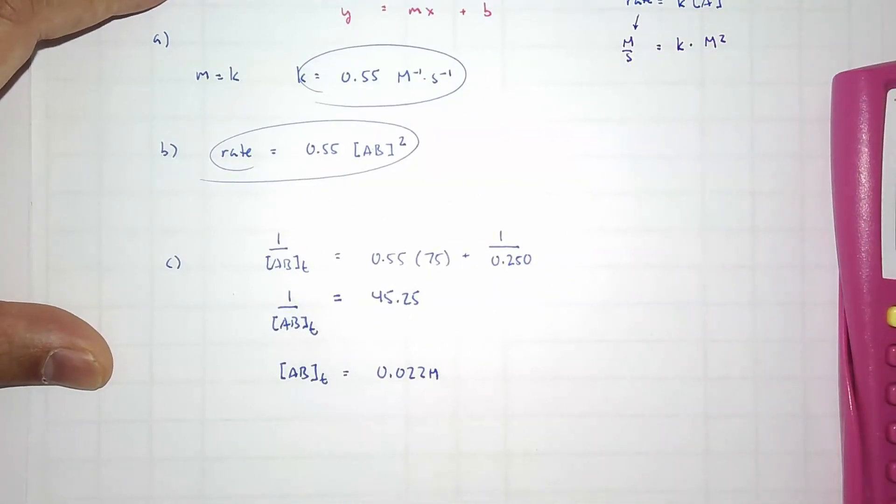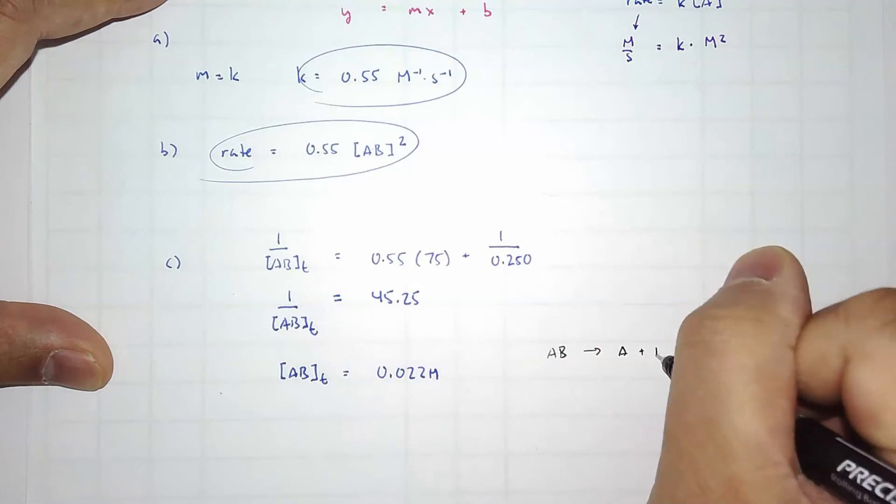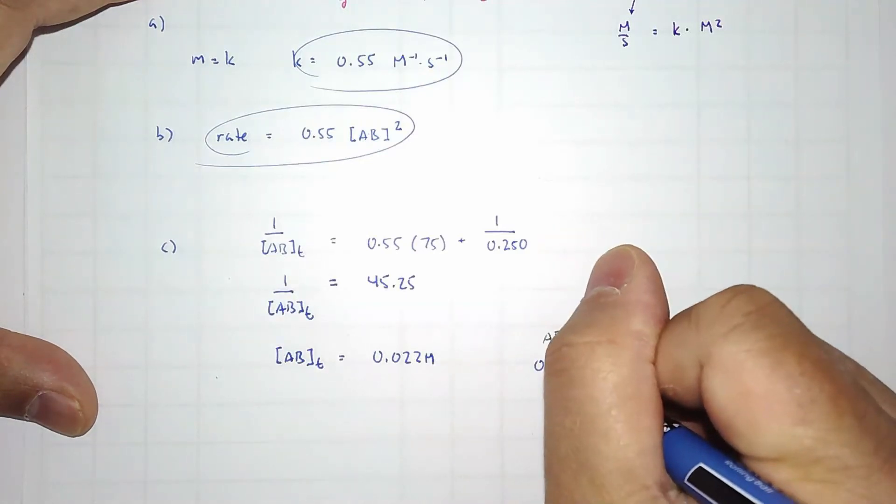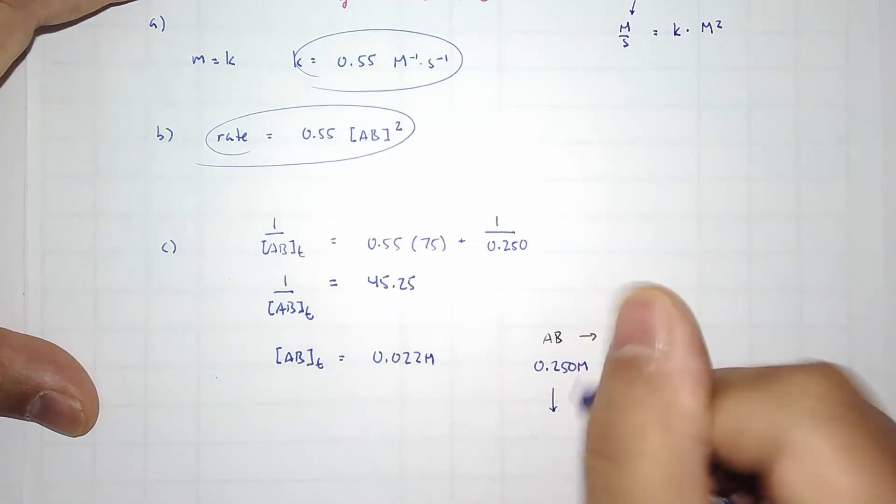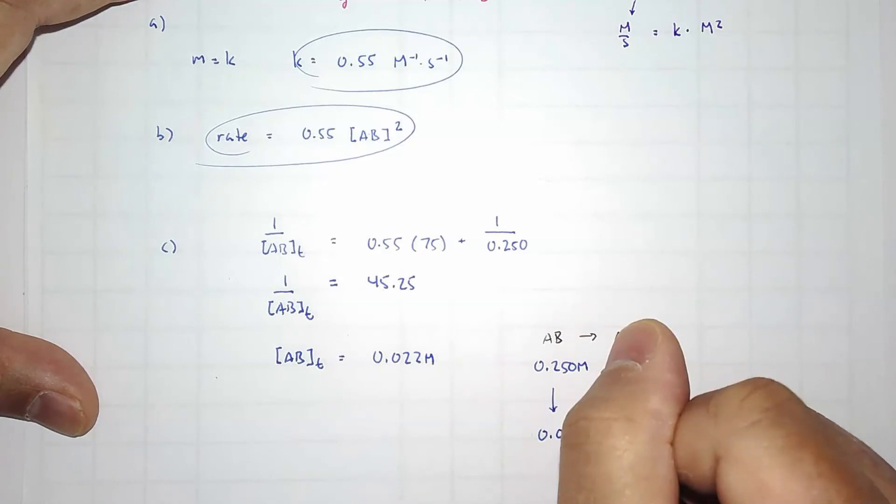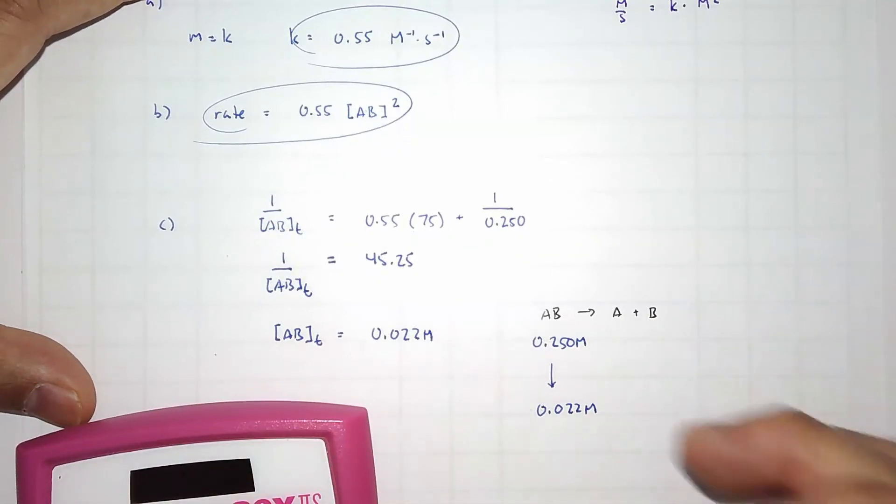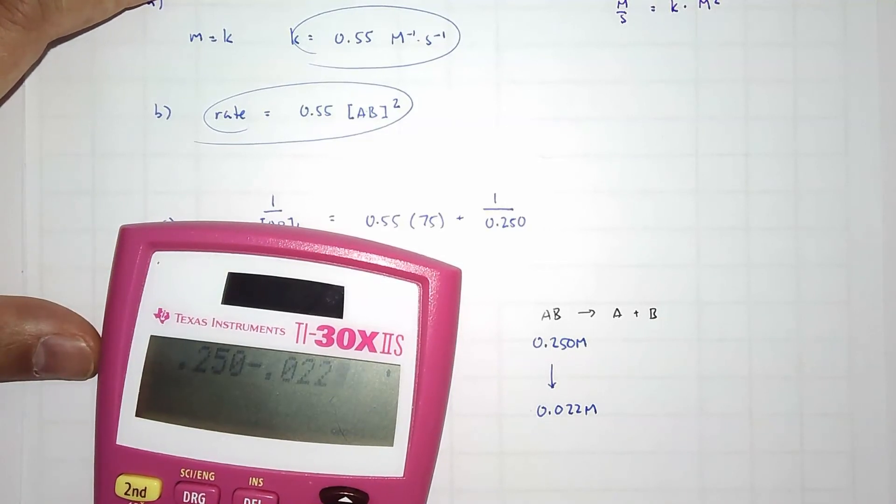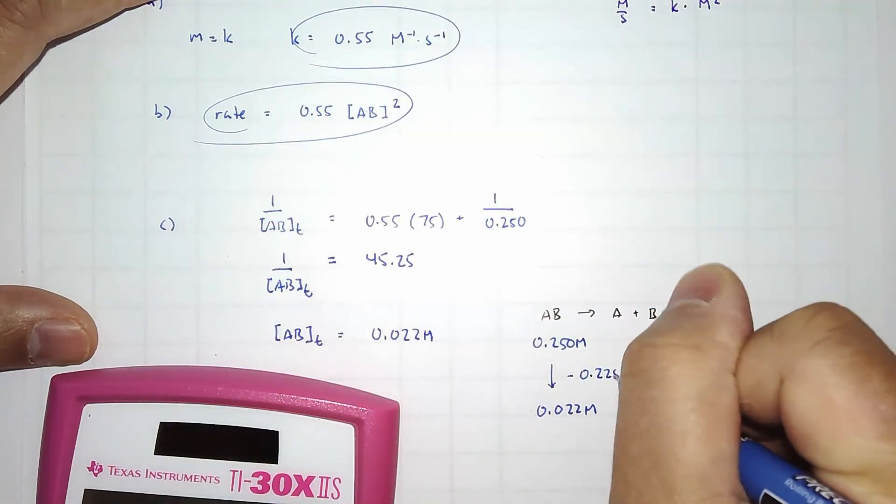Now our equation was AB goes to A plus B, so it's a 1 to 1 ratio. We started out with 0.250 molar, and then we went down to 0.022 molar. So what that means is that we lost, in terms of concentration, 0.228 molar.